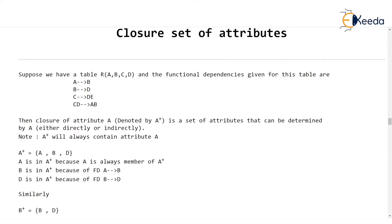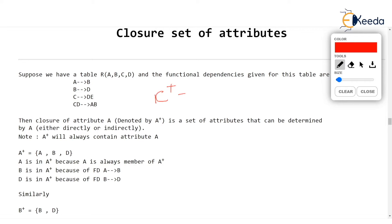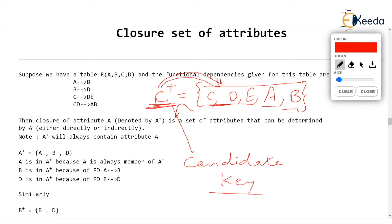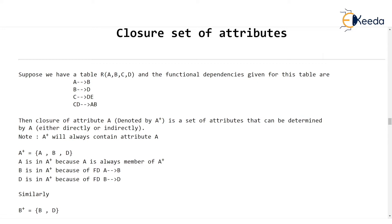This is interesting. C+ contains all attributes: C brought DE into the closure because C determines DE, and CD together brought A and B. All five attributes are there in the closure of C — you can read this as C functionally determines all the attributes. Such an attribute is called a candidate key. A candidate key is an attribute which can determine all the other attributes of the given table. If the FDs are given, you find out whose closure contains all other attributes — that will be the candidate key. We will learn candidate key in more detail; we are just now learning about closure.